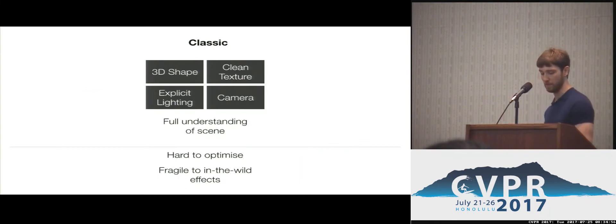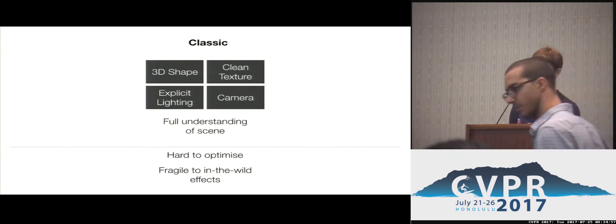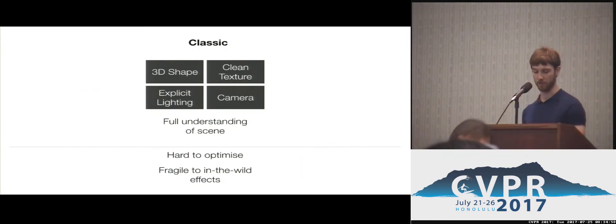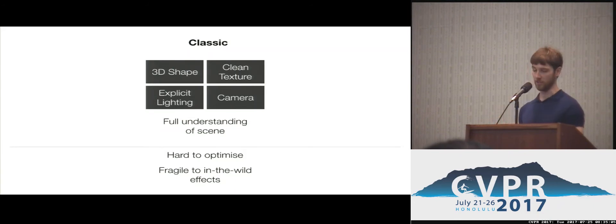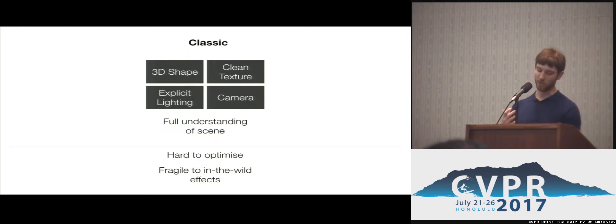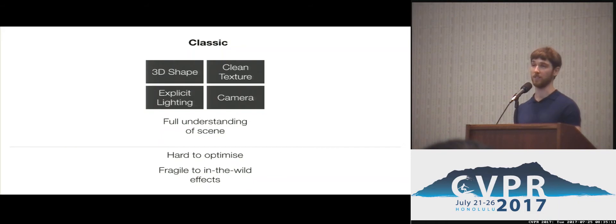The classic morphable model was ambitious and parameterized the image formation function at a granular level, with separate parameters for shape, lighting, albedo texture, and camera, all solved in a challenging joint optimization. For many in-the-wild images, which feature more complex lighting and occlusions, this was challenging to bring to convergence, making it somewhat fragile to use in practice.